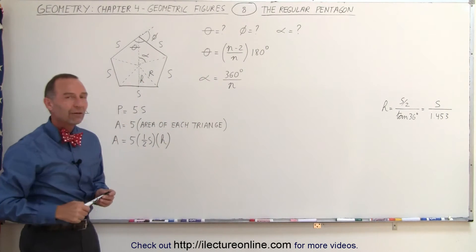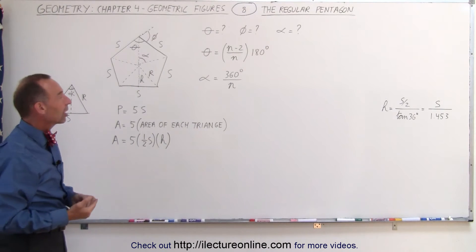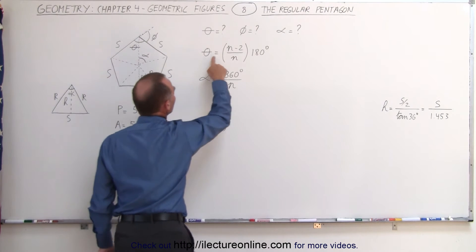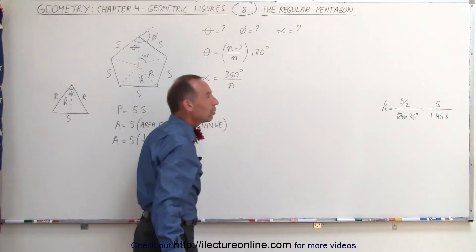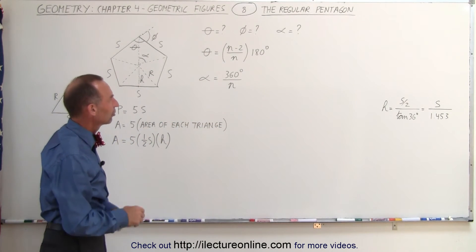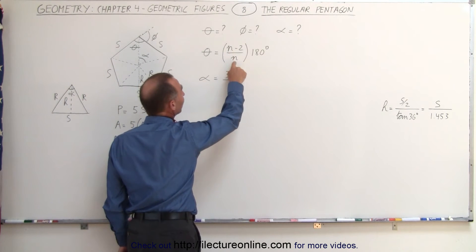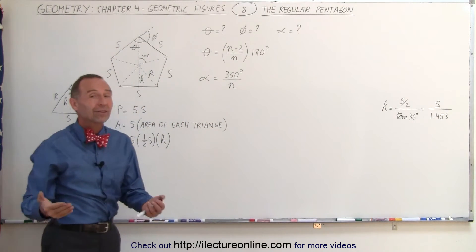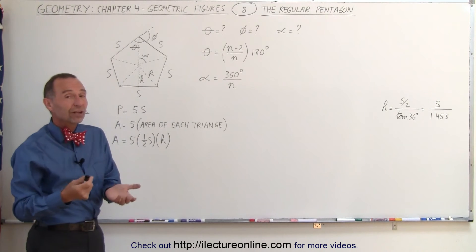For any regular polygon — a square, a pentagon, a hexagon, and so forth — the interior angle at each corner is equal to (n − 2) divided by n, times 180°, where n is the number of sides. Let's try it for a square: 4 minus 2 is 2, divided by 4 is one half, and one half times 180° is 90°. You know that each corner of a square is indeed 90°.